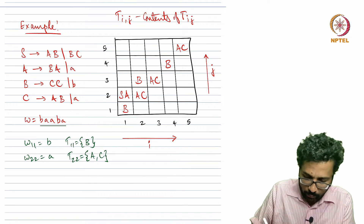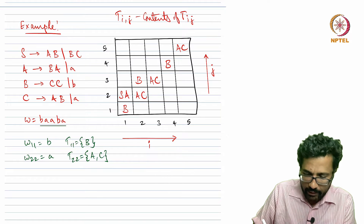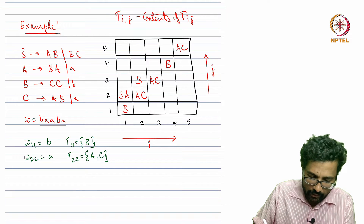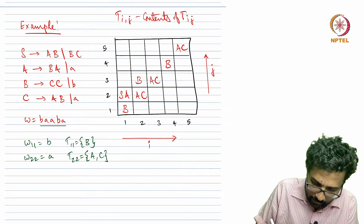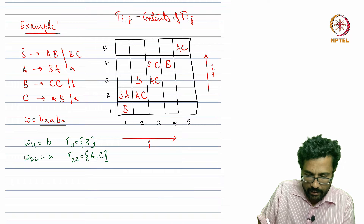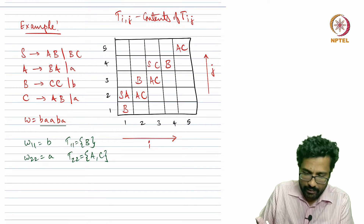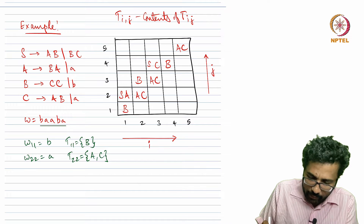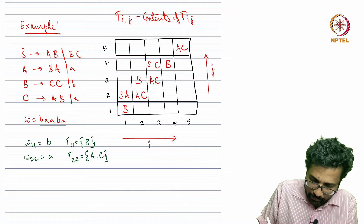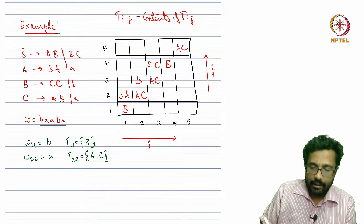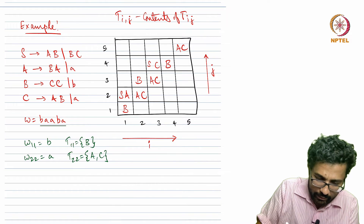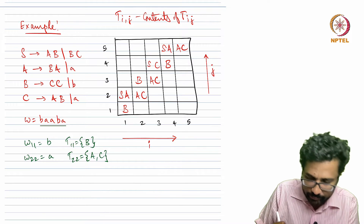Then T[4,5]: cell T[4,4] contains B and T[5,5] contains A and C. This is similar to cell T[1,2] because it has exactly the same variables, so we can just copy S and A into T[4,5].